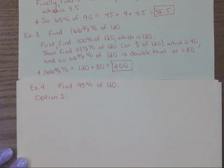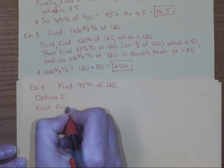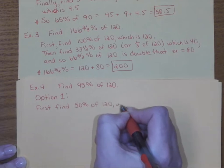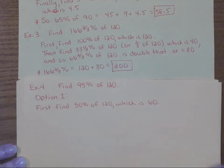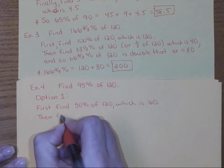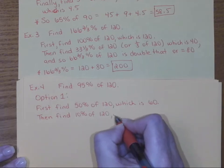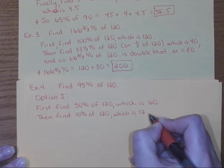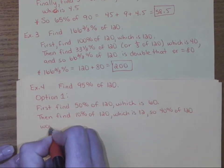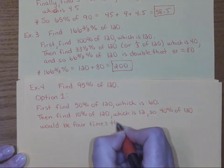We're going to look at two different options, both of which give us 95% of a number. Option one: I could find 50% of 120, which is 60 — half. Then I'll use benchmark percentages. I could find 10% of 120, which is 12 because we move the decimal place. So 40% of 120 would be four times that — four times 12 is 48.